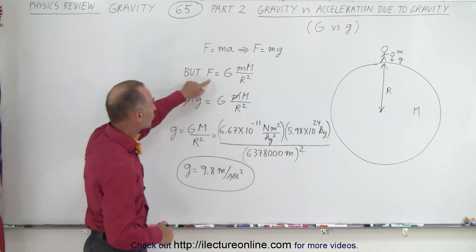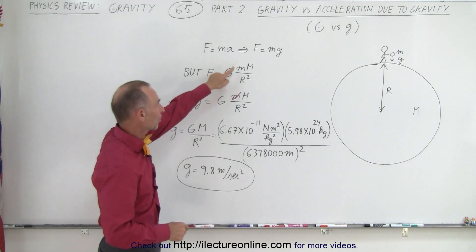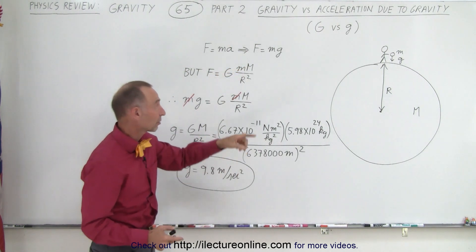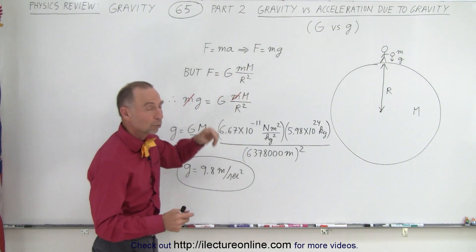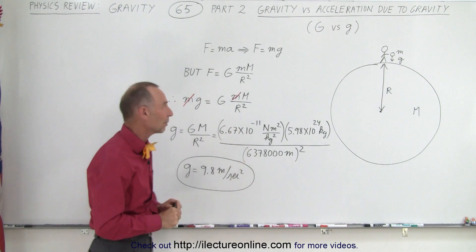The equation we use is F equals the universal gravitational constant G times the product of the two masses, divided by the distance between them squared. This distance is measured to the center of mass of the two objects.